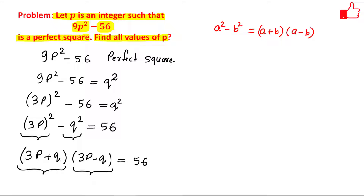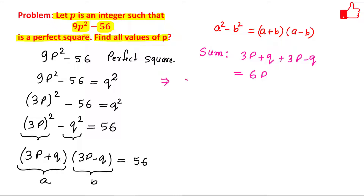Let us say (3p + q) = a and (3p - q) = b. What is the sum of these two numbers? The sum is (3p + q) + (3p - q) = 6p. So the sum of the two factor pairs must equal 6p, meaning the sum is a factor of 6 — that is, the sum must be divisible by 6.